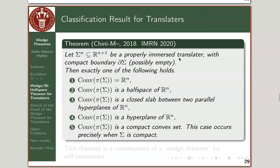Here is our theorem — available on arXiv or in published form. For a properly immersed translator with compact boundary, the convex hull of the projection in the translation direction must be one of five types: a slab, a hyperplane, a half-space, all of R^n, or a compact convex set when the boundary is compact.